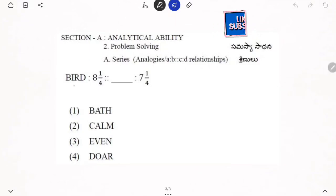Here what is given? BIRD is given with 8, 1 by 4. Then that should be equal to or proportional to 7, 1 by 4. What word we will get here?